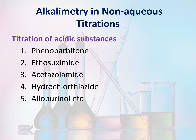Alkalimetry in non-aqueous titration: Titration of weakly acidic substances like phenobarbitone, ethosuximide, acetazolamide, hydrochlorothiazide, allopurinol, etc. are assayed by non-aqueous titration. The titrants used for acidic substances are 0.1 molar potassium methoxide, lithium methoxide, sodium methoxide, and tetrabutylammonium hydroxide. The solvent is dimethylformamide. The indicator is quinaldine red.